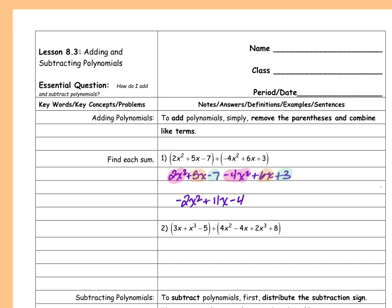There's another way you can do this. I'm going to take my first polynomial — 2x squared plus 5x minus 7 — and write it vertically, placing them underneath each other. I want to line up my like terms, so negative 4x squared goes there, plus 6x there, and plus 3 here. Then I just add the columns, since each column has like terms. I still get negative 2x squared plus 11x minus 4.